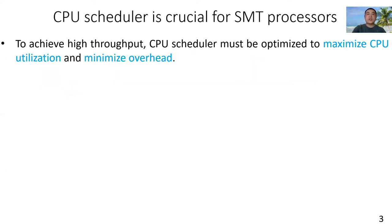Due to resource sharing between hardware threads, CPU schedulers are crucial for achieving high throughput on SMT processors. To achieve high throughput, CPU scheduling must be optimized in two aspects: the first aspect is to maximize CPU utilization, and the second aspect is to minimize overhead.